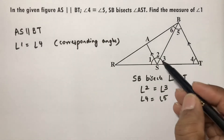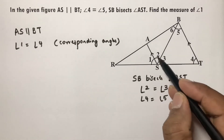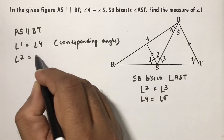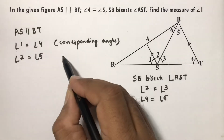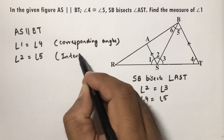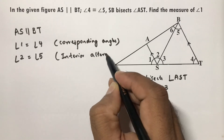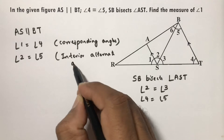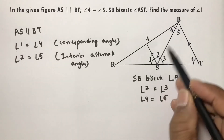Next, since AS is parallel to BT, angle 2 equals angle 5, because of interior alternate angles.